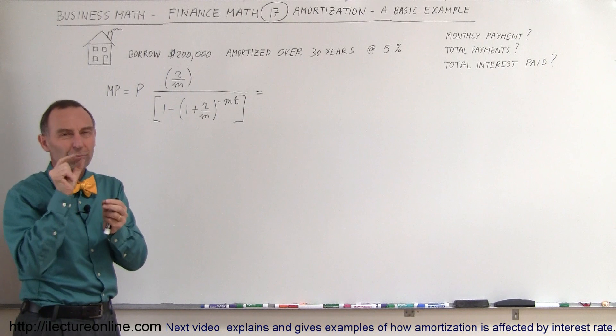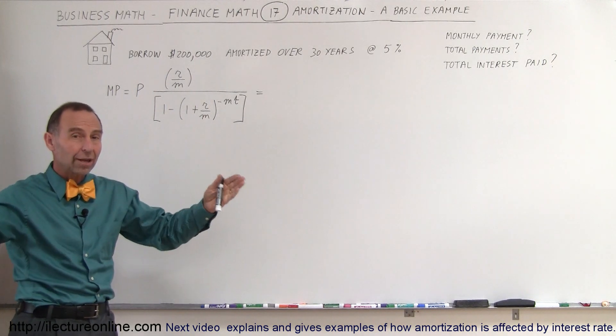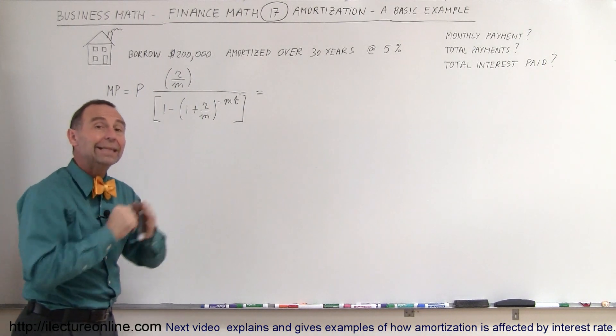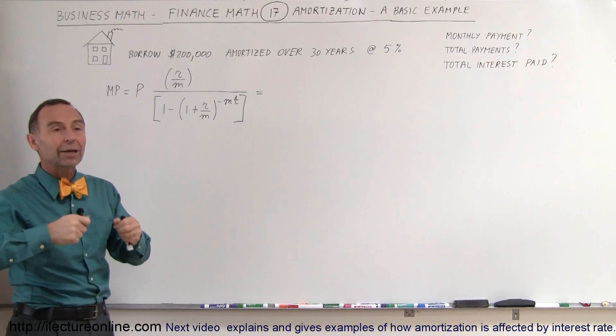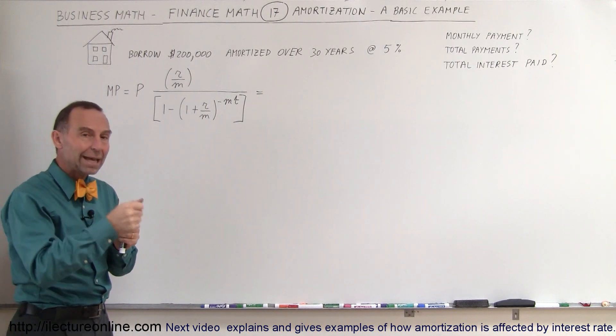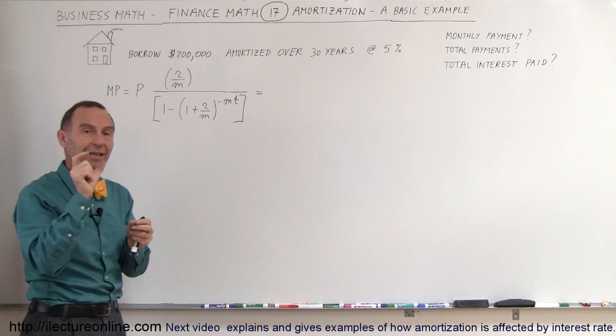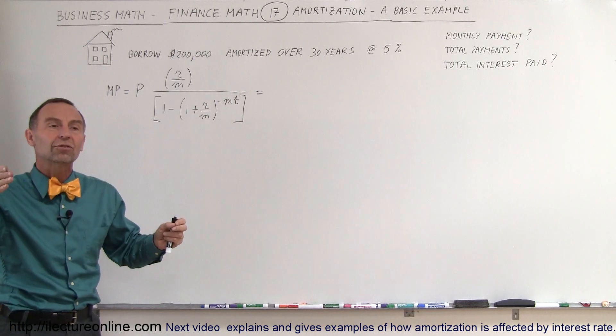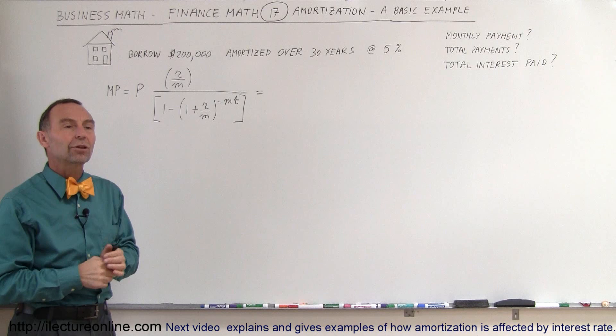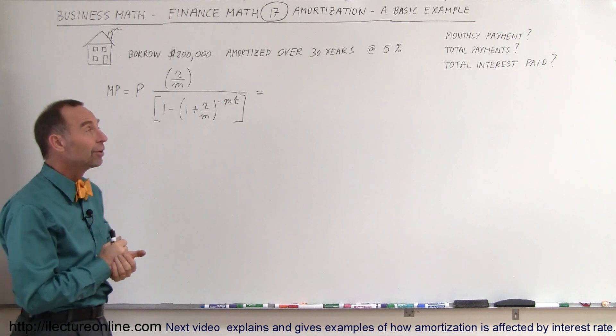Initially, a very small portion of the payment will go to paying back the principal, a lot of the payment will go to paying the interest and as time goes by, a greater and greater portion of your payment will go to paying off the principal, less and less of the interest and after 30 years, the last payment will basically pay off whatever is left on the loan and the house is then free and clear, you then own the entire house.